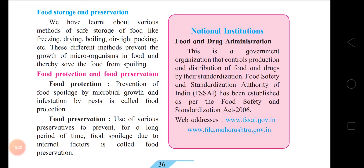Food protection means preventing food spoilage by microbial growth and infestation by pests. Prevention of food spoilage by microbial growth and infestation by pests is called food protection. Food preservation means the use of various preservatives to prevent food spoilage due to internal factors for a long period of time. For example, the preservatives added to chips — that is why they last long and you can eat them anytime.